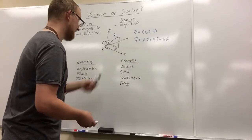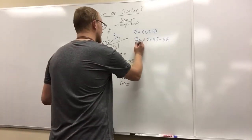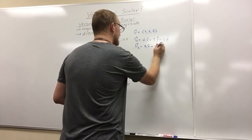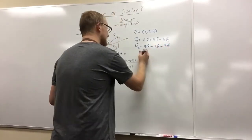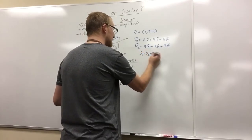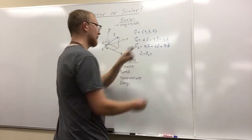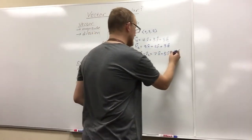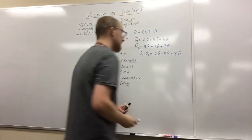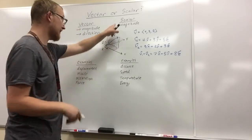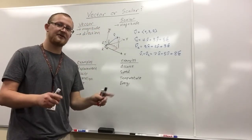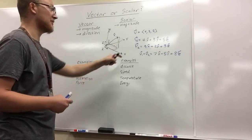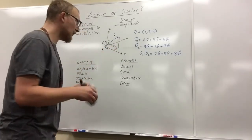Let's say V1 = 4x-hat + 3y-hat + 5z-hat and V2 = 3x-hat + 2y-hat + 3z-hat. To find V1 + V2, we add only the like components: 4 + 3 = 7x-hat, 3 + 2 = 5y-hat, and 5 + 3 = 8z-hat. This is how we add vectors, and it's exactly why it's so important to know the difference between a vector and a scalar — scalars can be added freely, but vectors must follow these rules.